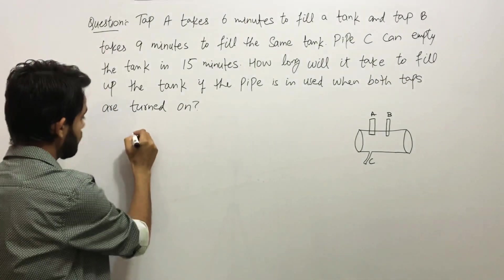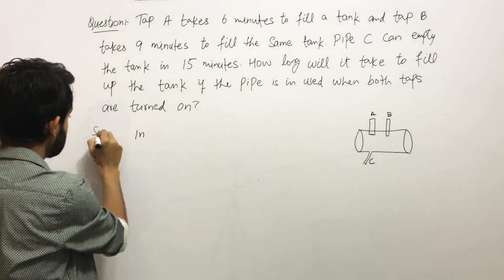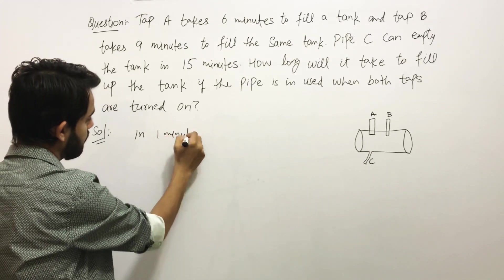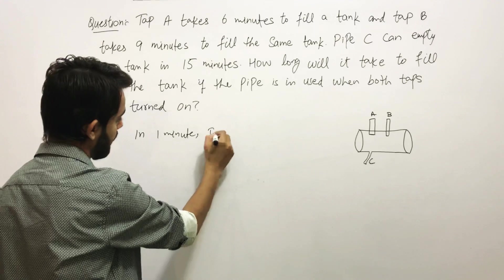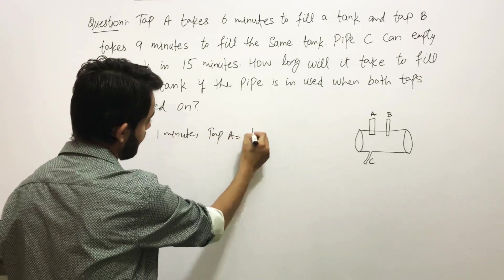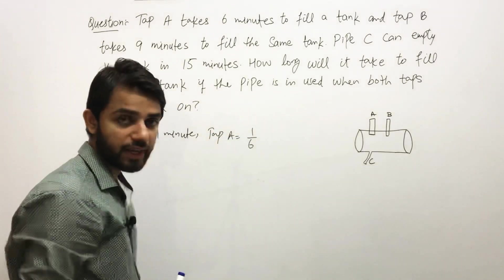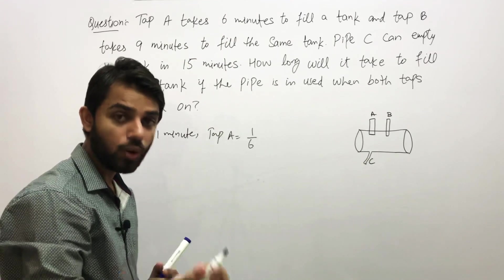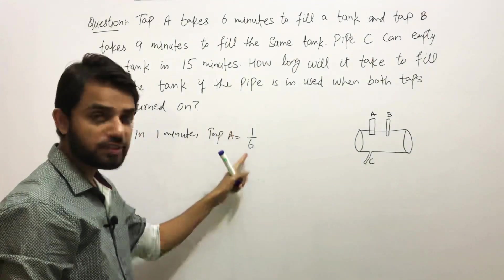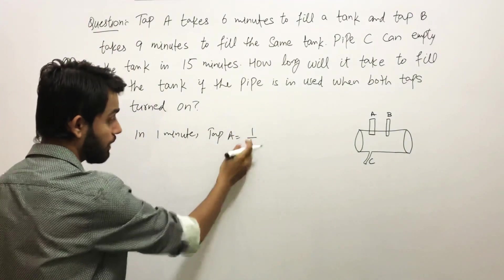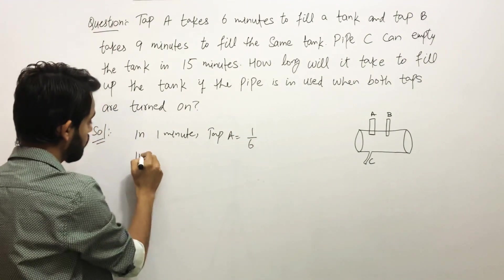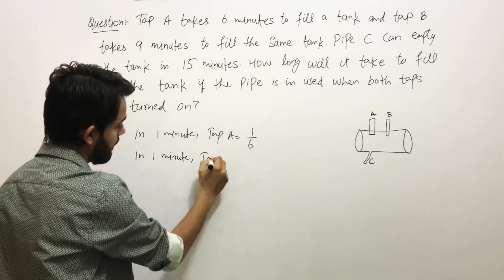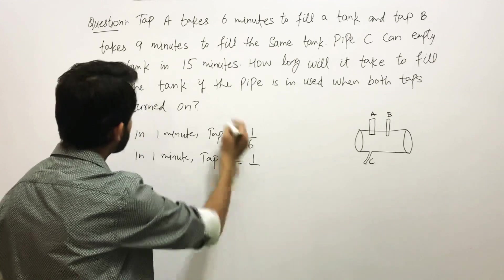Tap A takes 6 minutes to fill up the tank, so in 1 minute, for Tap A it will fill 1/6 of the tank. For Tap A it's taking 6 minutes to fill up the whole tank, so in 1 minute it will fill 1/6 of the tank.